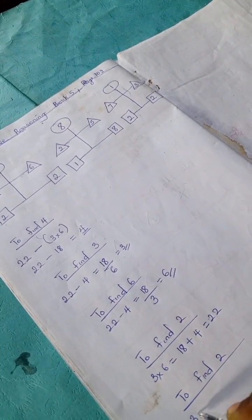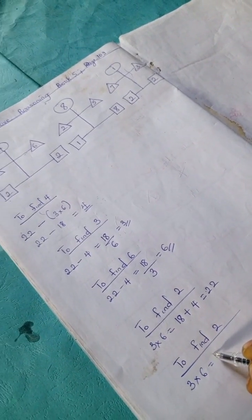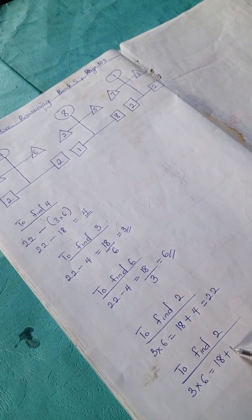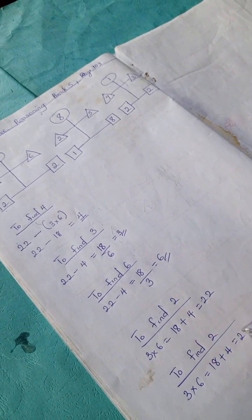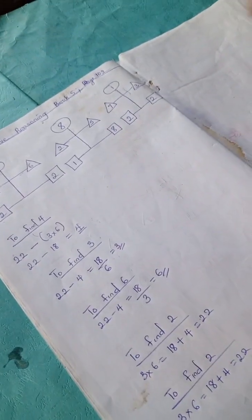To find the other 2, simply do the same: 3 times 6 is 18, 18 plus 4 we have 22, so the other 2 goes to this.